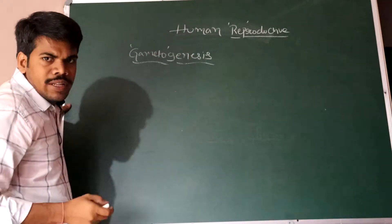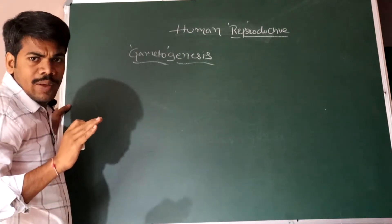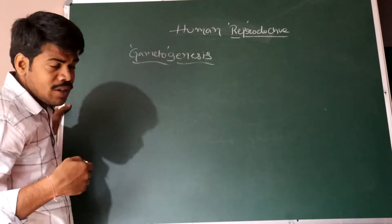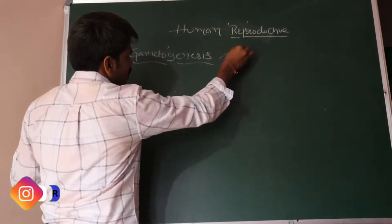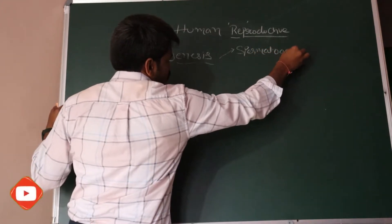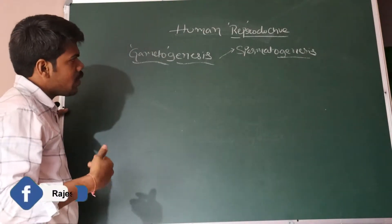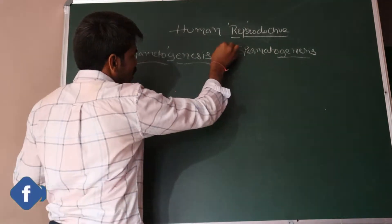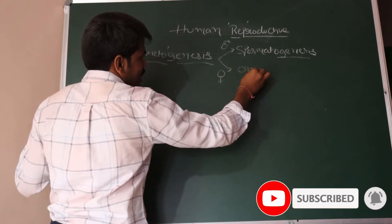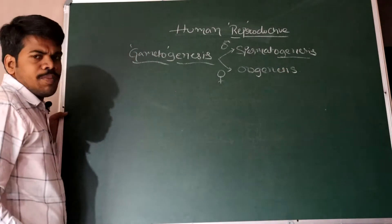The word 'gamete' refers to either a sperm or an ovum — whatever it is, that is a gamete. The production of the gamete is called gametogenesis. If it is from the male reproductive system, the gamete is the sperm, so that is called spermatogenesis. 'Genesis' means generating or producing. If it is the female, that is oogenesis.